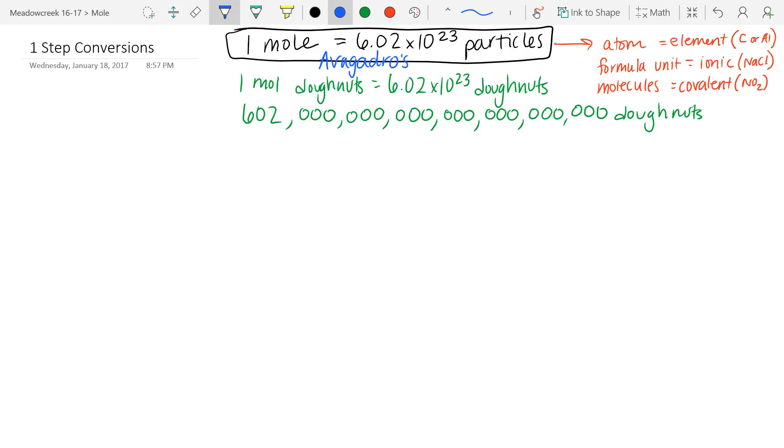Now the reason why it's called Avogadro's number is because this Italian scientist whose last name was Avogadro is the one who determined how many particles there were in a mole. The way he did this was he said if we look at two systems that have gases in them.